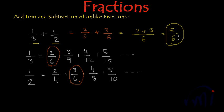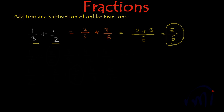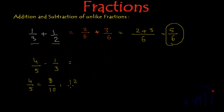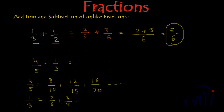The similar thing can be done in the case of subtraction also. Like if I want to subtract 1 by 3 from 4 by 5, we will write equivalent fractions of 4 by 5 and 1 by 3. Equivalent fractions for 4 by 5: multiplying by 2 gives 8 by 10, multiplying by 3 gives 12 by 15, multiplying by 4 gives 16 by 20. And equivalent fractions for 1 by 3: multiplying by 2 gives 2 by 6, then 3 by 9, 4 by 12, 5 by 15, and 6 by 18.